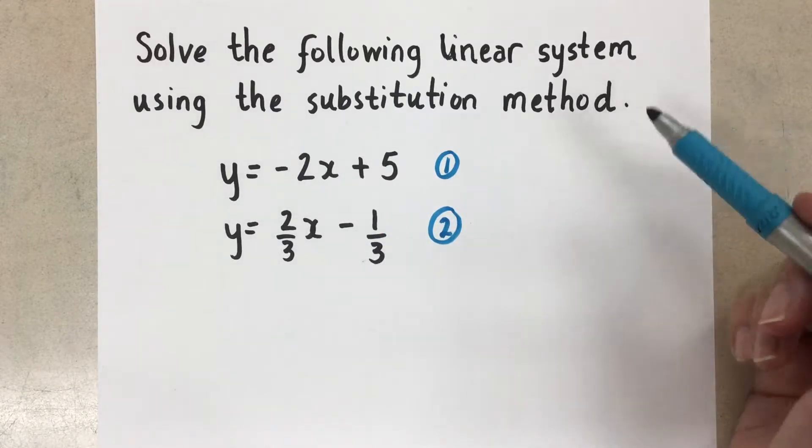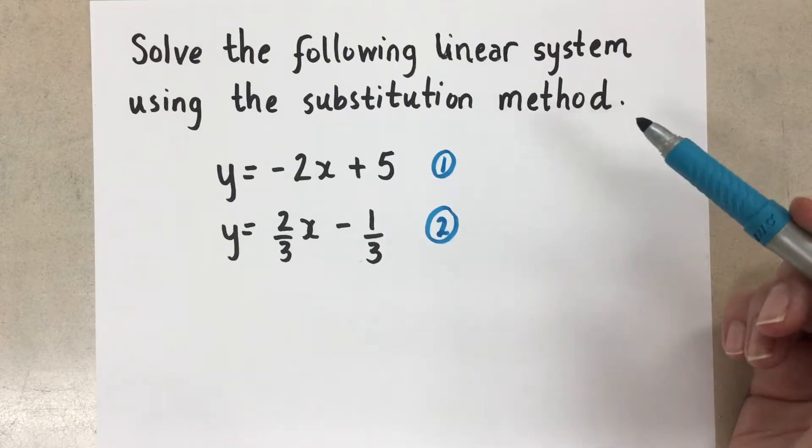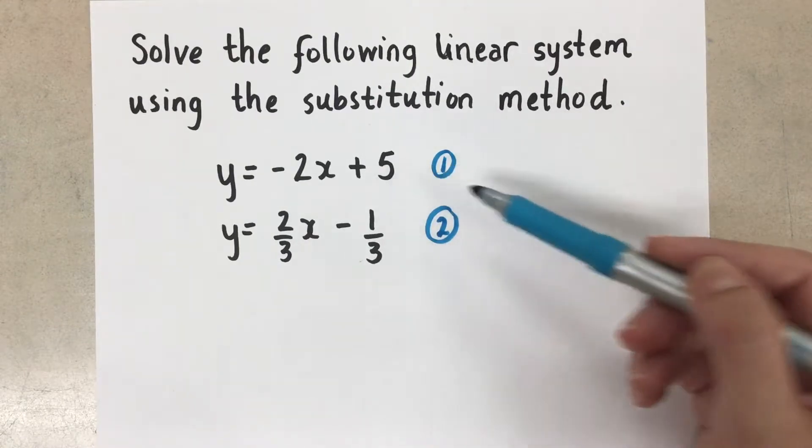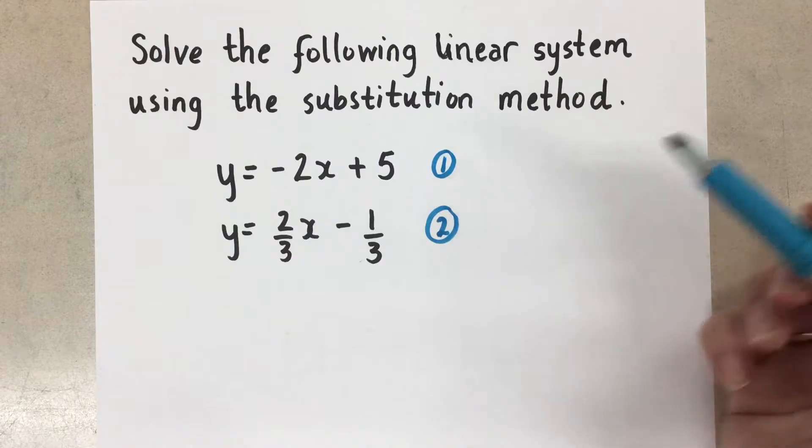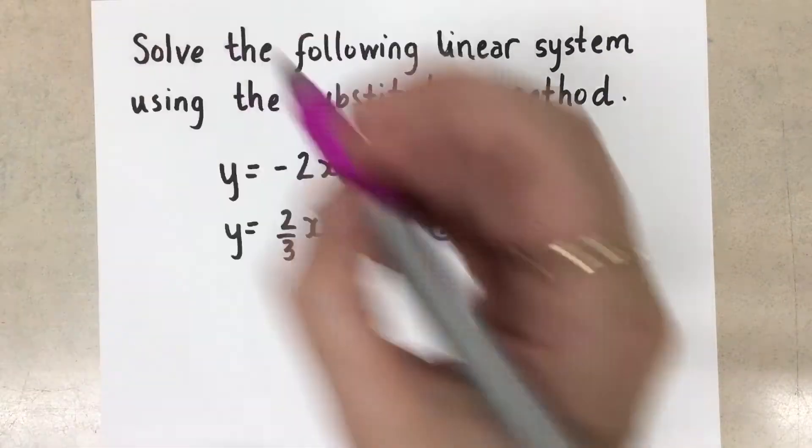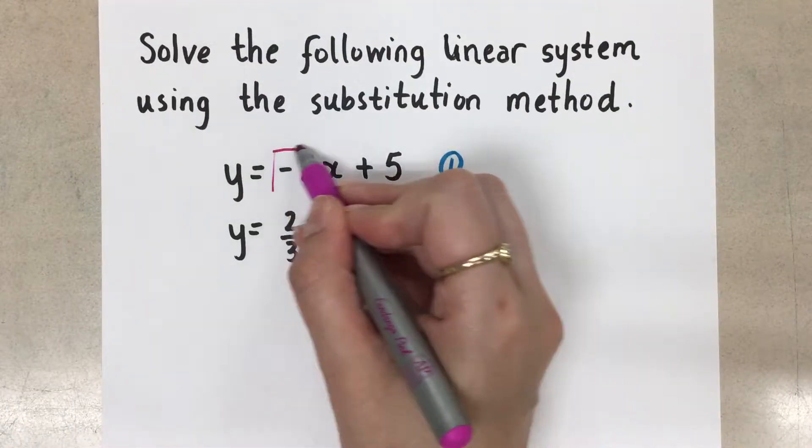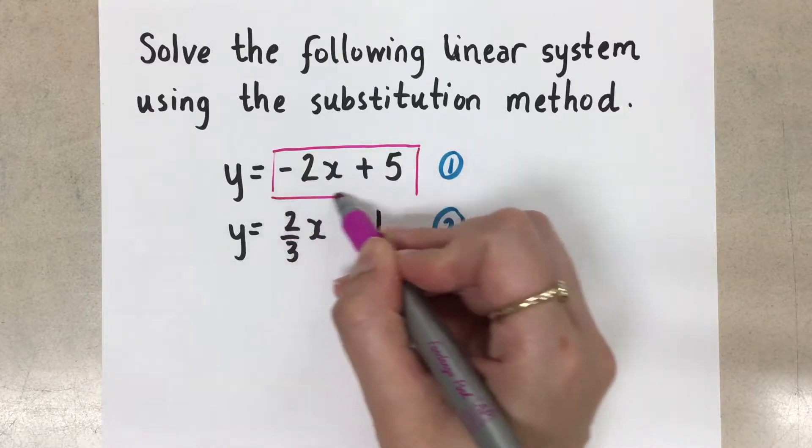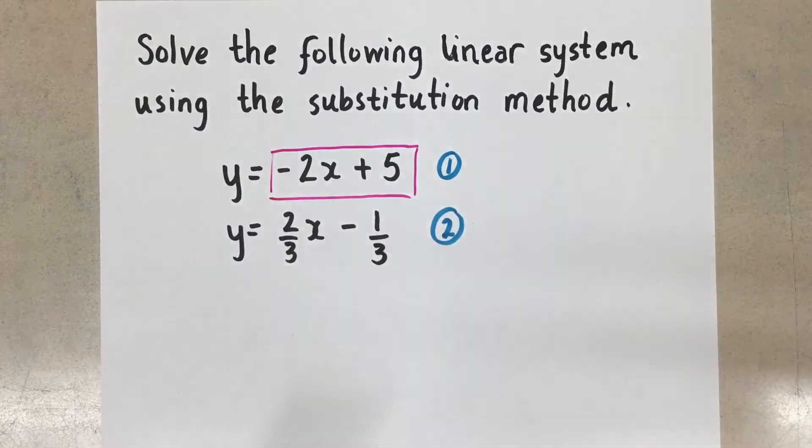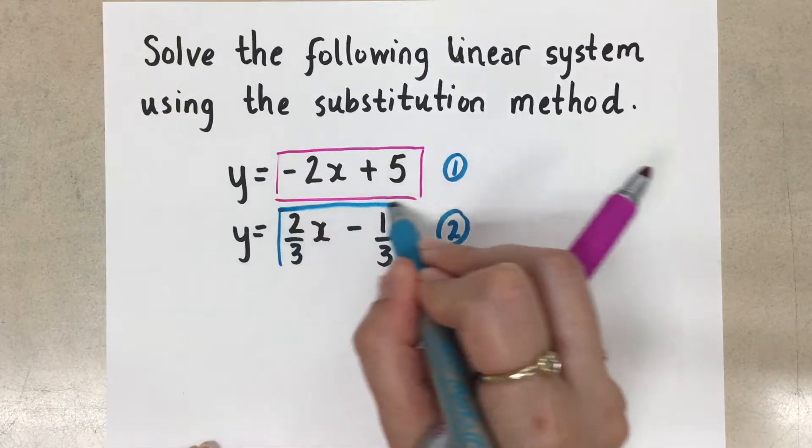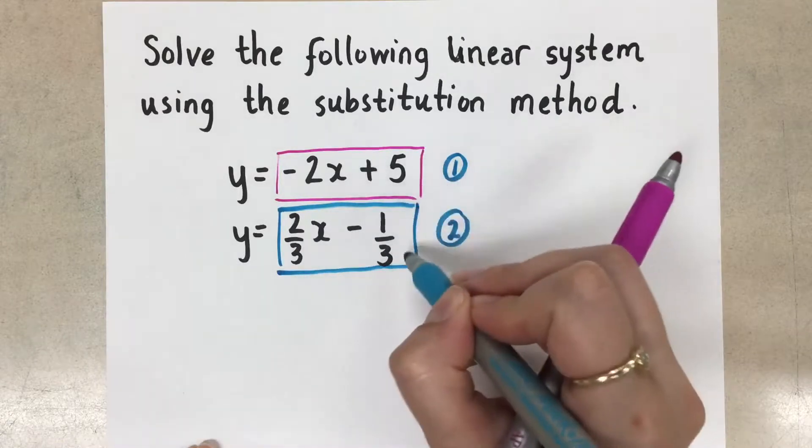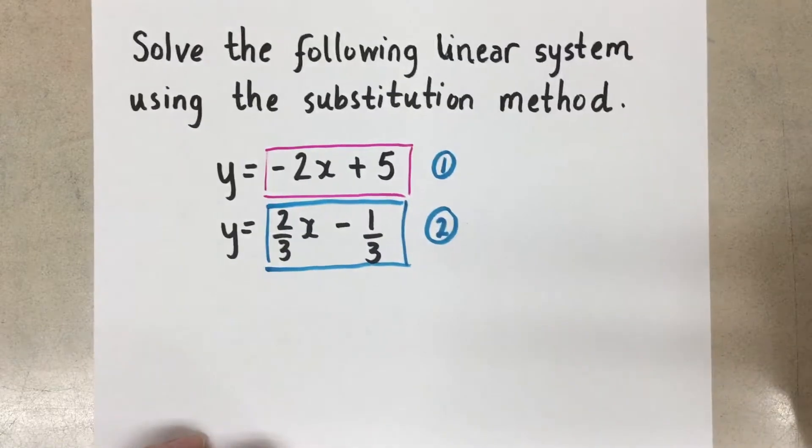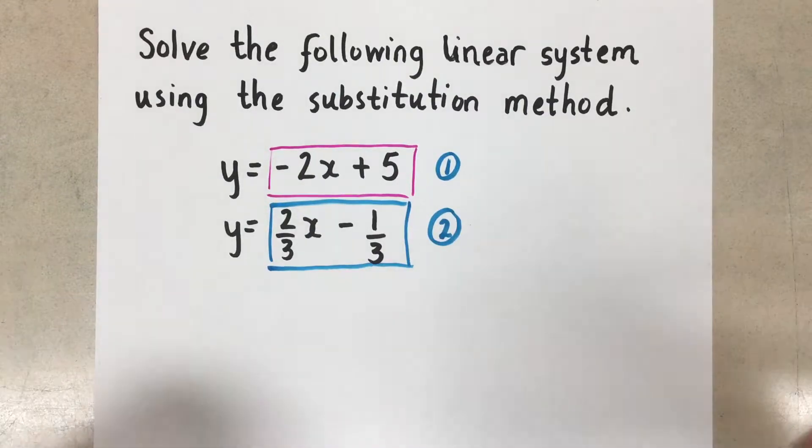So in using this substitution method, we want to substitute one equation into the other equation. Well, if this says y equals this bit here, and y equals this part here, then both of these expressions must be equal to each other since they're both equal to y.